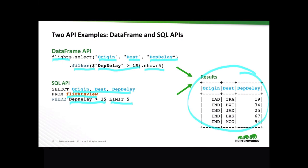What this demonstrates is that there are two different ways of accessing and manipulating your data. You can either go with the more programmatic approach using the DataFrame API, or you can just write a SQL query. In both cases, you have the same result and the same performance, so you can choose the API that you're most comfortable with.